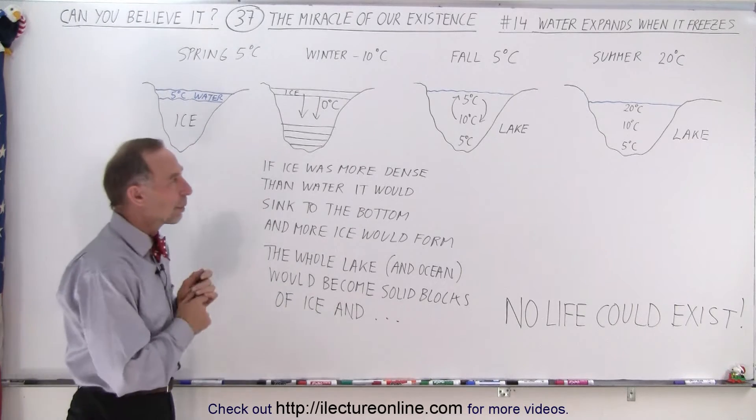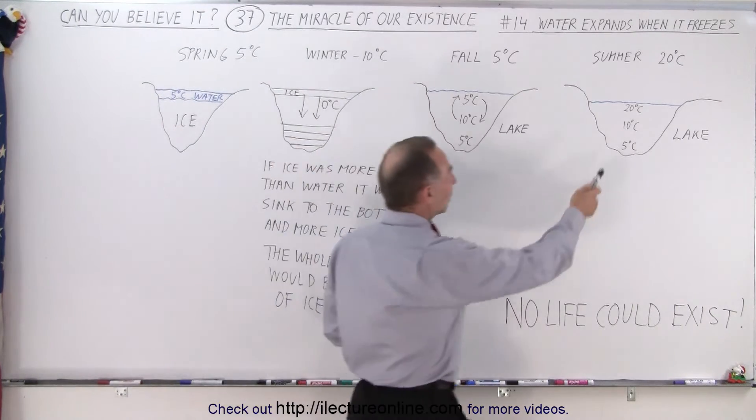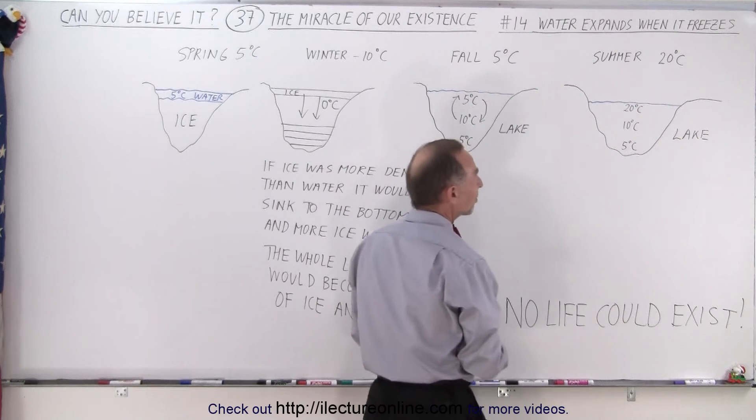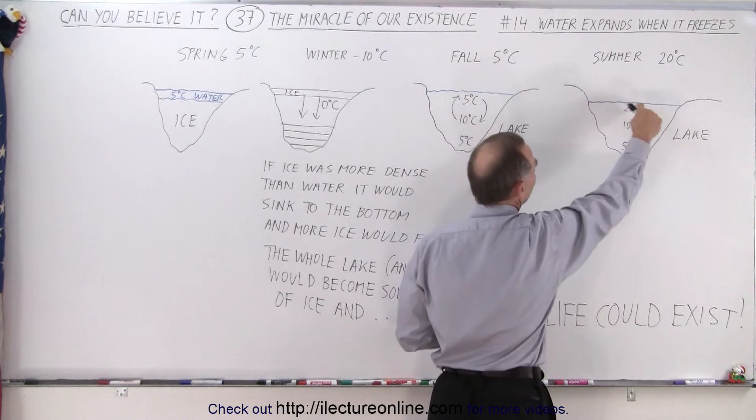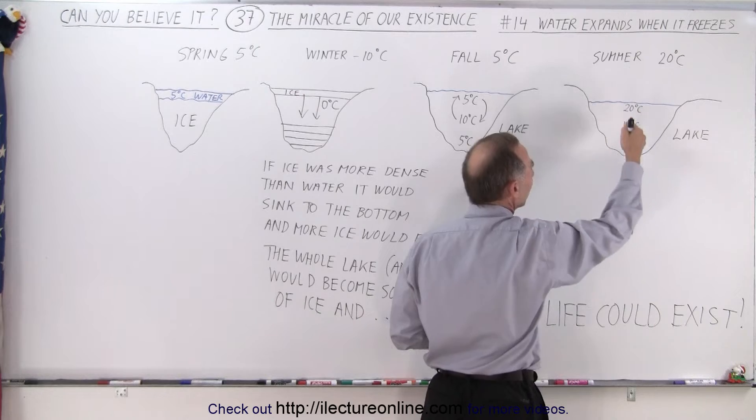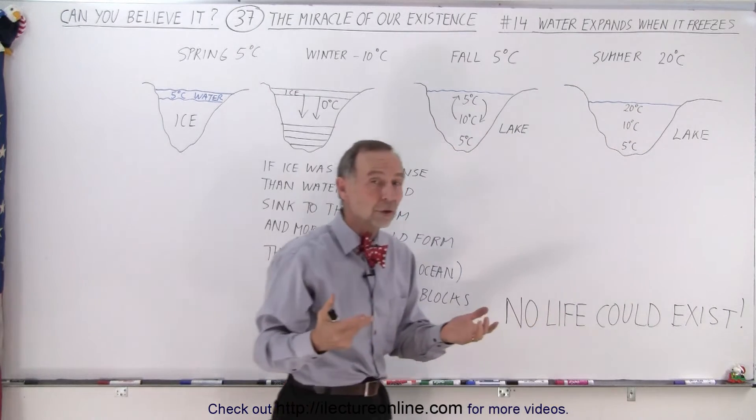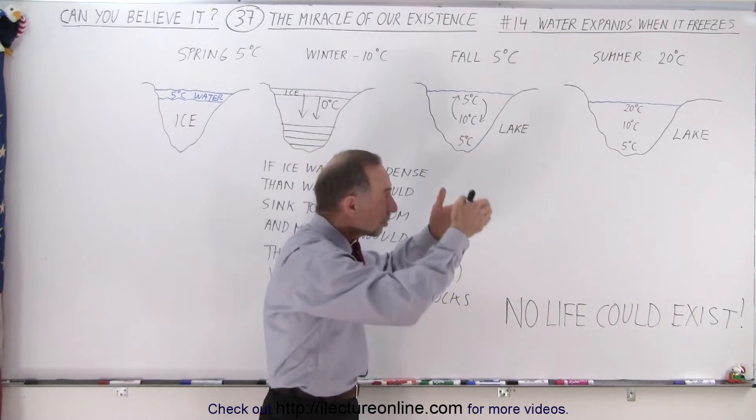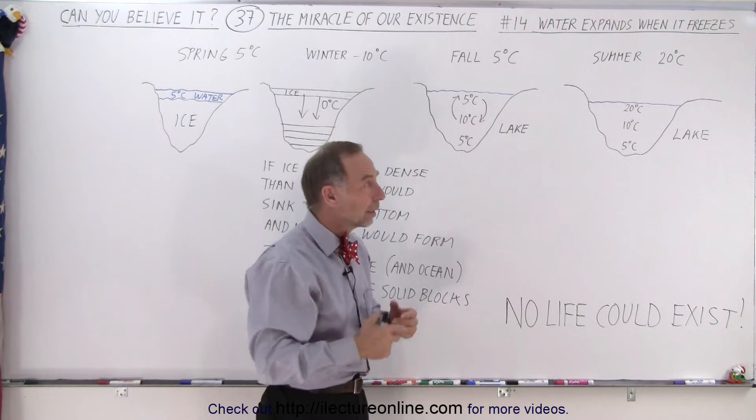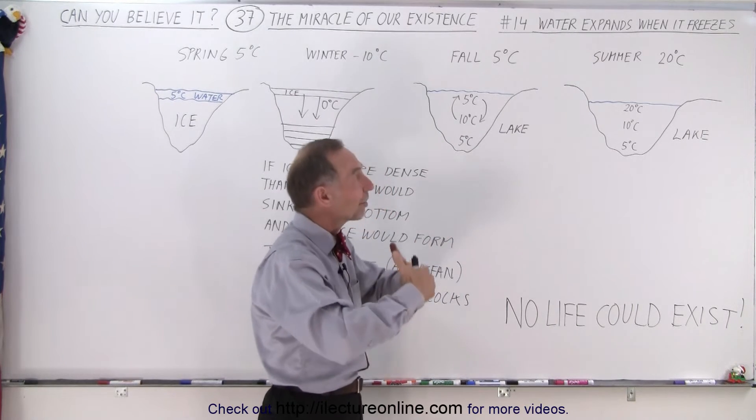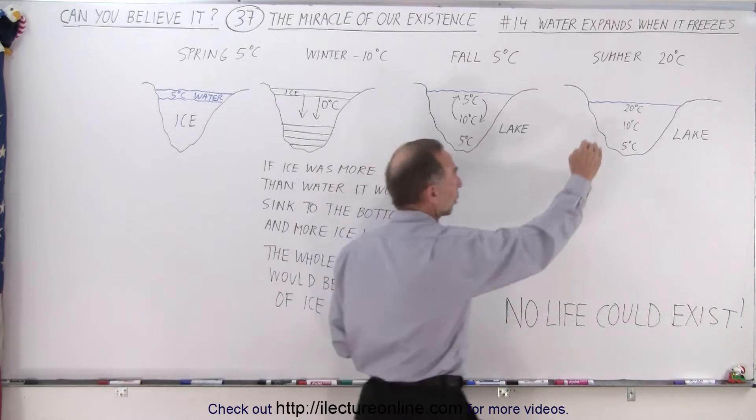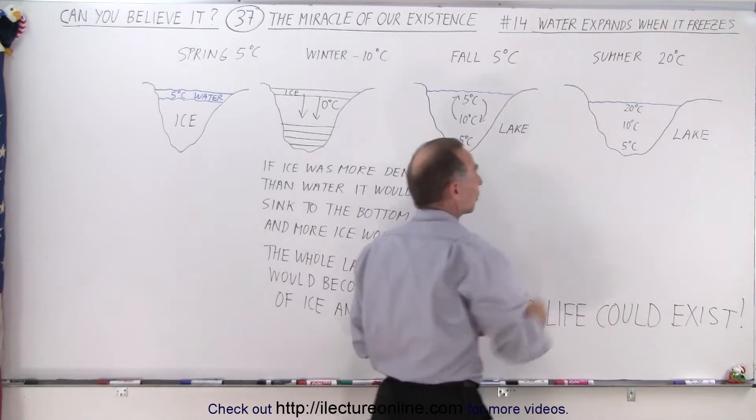So let's take a look here what would happen. Let's say that we have a lake. It's summer, it's 20 degrees celsius outside. You can see that the water at the very top will be 20 degrees celsius and the water at the bottom of the lake would be cooler because cooler water tends to be more dense and it would sink to the bottom of the lake. Warmer water would then rise to the top.